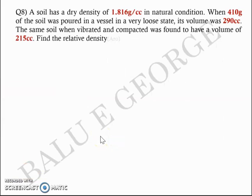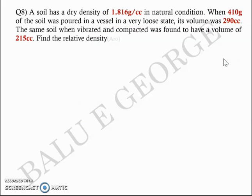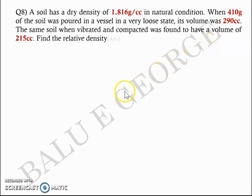The next question is based on relative density. A soil has a dry density of 1.816 g/cc in its natural condition. When 410 grams of the soil was poured into a vessel in a very loose state, its volume was found to be 290 cc. The same soil, when vibrated and compacted, was found to have a volume of 215 cc. You are asked to get the relative density.